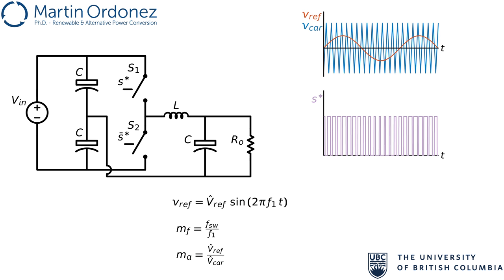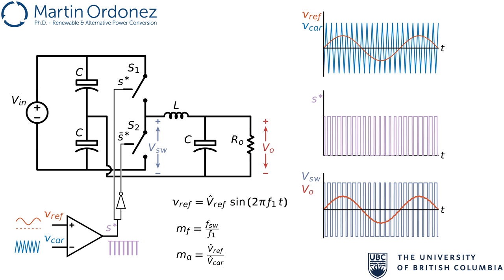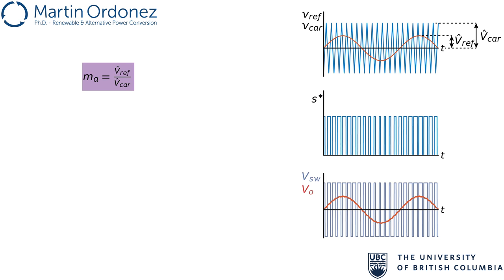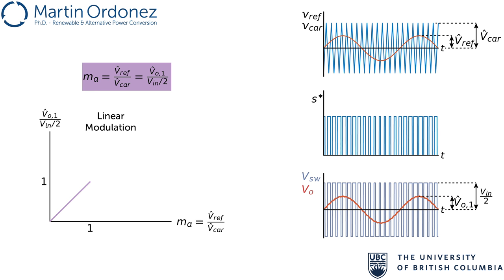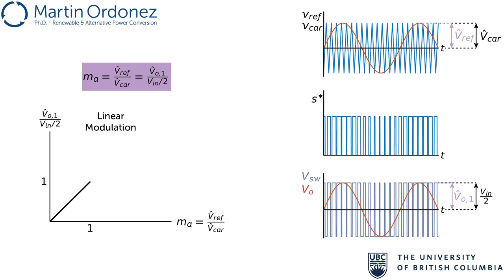To control the inverter, we take the output of the comparator circuit and connect it to S1. We invert S to control S2. This will produce a pulsating V-switch, and after the filter, the sine wave, VO. The amplitude of VO is controlled by MA. When MA is lower than 1, it is also equal to V out peak divided by V in over 2. This is called linear modulation region, and it extends until the amplitude of VREF is equal to the amplitude of VCAR, MA equal to 1. In this region, the distortion comes only from the high frequency ripple.